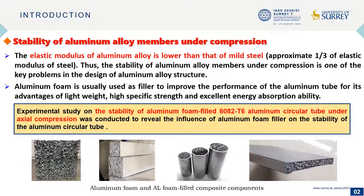However, the elastic modulus of aluminum alloy is lower than that of mild steel, and the stability of aluminum alloy members under compression is one of the key problems in the design of aluminum structures.